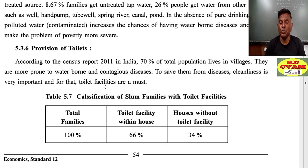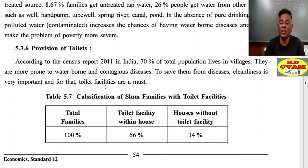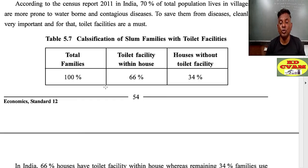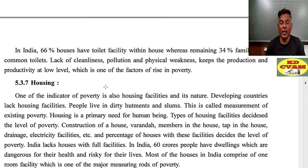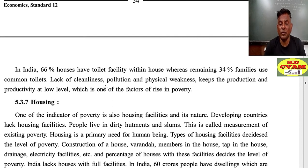Provision of toilet is another indicator. According to the Census Report 2011, 70% of the total population lives in villages and they are more prone to waterborne and contagious diseases. Cleanliness is very important to save them from diseases, and toilet facilities are a must. Of total families, 66% have toilet facilities within the house, whereas the remaining 34% families use common toilets. Lack of cleanliness, pollution, and physical weakness keep production and productivity at a low level, which is one of the factors of rising poverty.